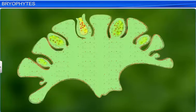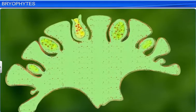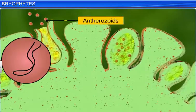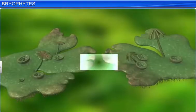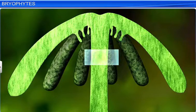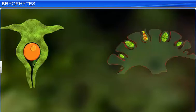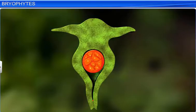The male sex organs are called the antheridia, and they produce biflagellate antherozoids. The female sex organs, called the archegonia, are flask shaped, and each produces a single egg. During fertilization, the antheridium releases antherozoids in water, where they come into contact with the mouth of the archegonium. One antherozoid fuses with the egg to form a zygote.